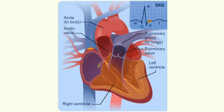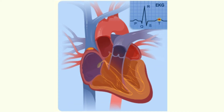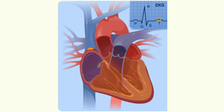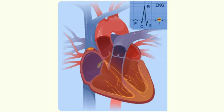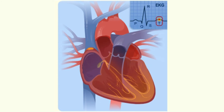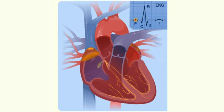As the signal passes, the walls of your heart's ventricles relax and await the next signal. On the EKG, the T wave marks the point at which your heart's ventricles are relaxing. This process continues over and over.